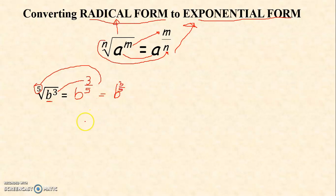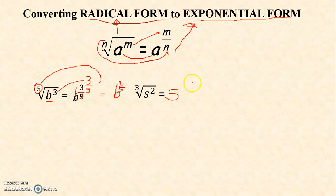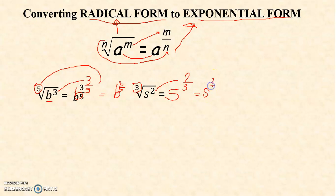Next, we have the cube root of s raised to 2. Again, s will be your base. Your exponent here will be the numerator and your index will be the denominator. So you have s raised to 2 over 3.